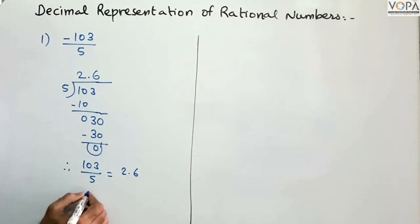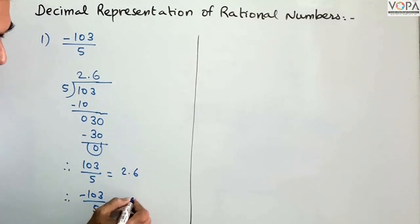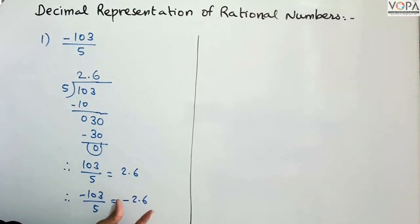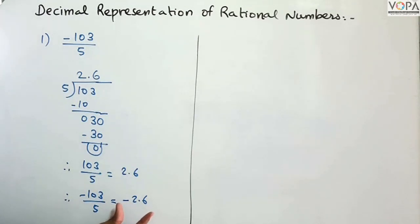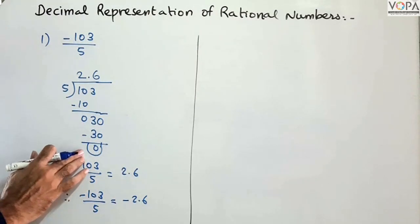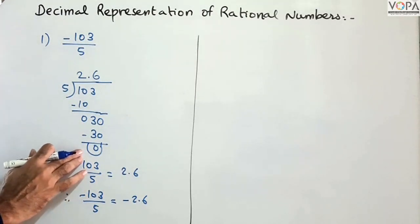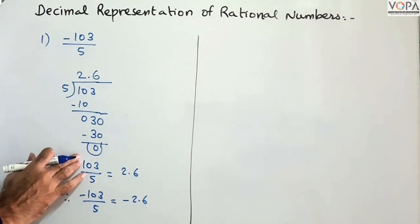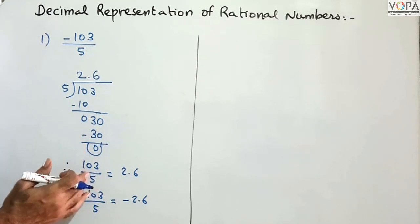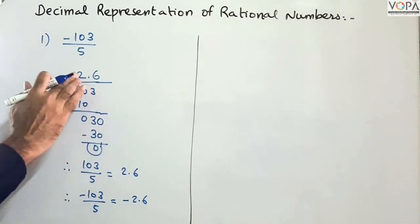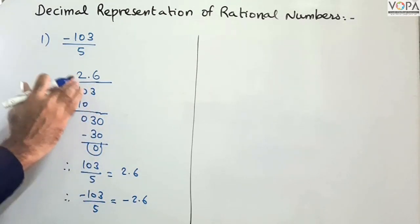Since the division has stopped and we got remainder 0, if we get remainder 0 then there is no more division. This decimal number will be a terminating decimal.